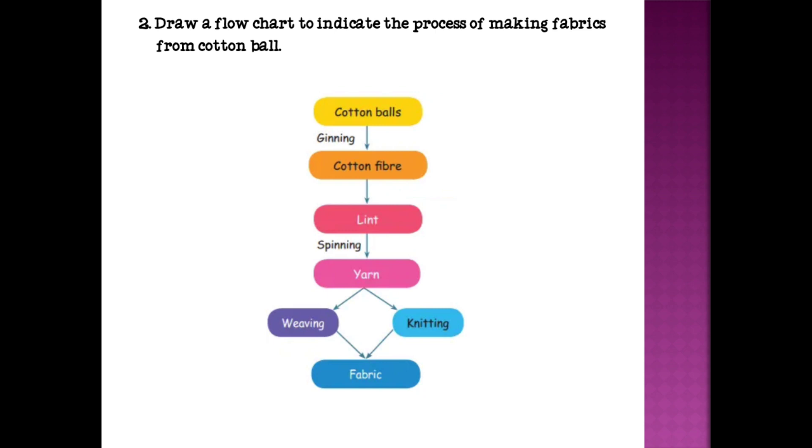Draw a flow chart to indicate the process of making fabrics from cotton ball. First, cotton balls are converted into cotton fiber by the process called ginning. From the cotton fiber we get lint. From the lint we get yarn by the process of spinning. Yarn is divided into weaving method and knitting method. Both are given product output as fabric.